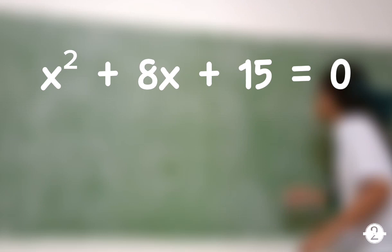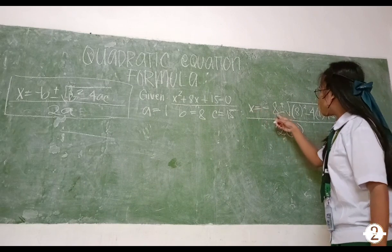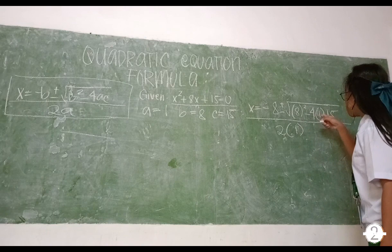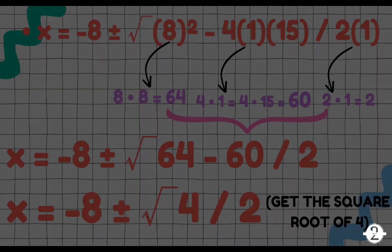Ang given natin ay x² + 8x + 15 = 0. Kunin ang value ng a, b, at c. a is 1, b is 8, c is 15. x equals negative 8 plus or minus radical 8² minus 4 times 1 times 15 all divided by 2 times 1.